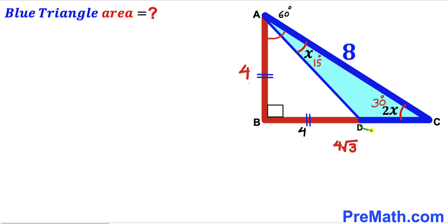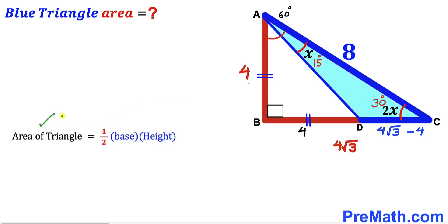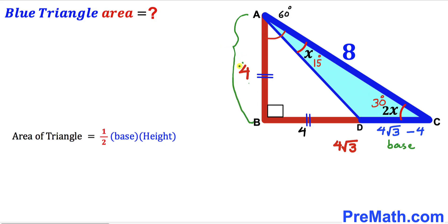Therefore the remaining segment CD equals 4 times the square root of 3 minus 4. Now for the final step, we calculate the area of the blue shaded triangle ACD. The area formula is one-half times base times height. The base of this triangle is segment CD and the height is 4 units.